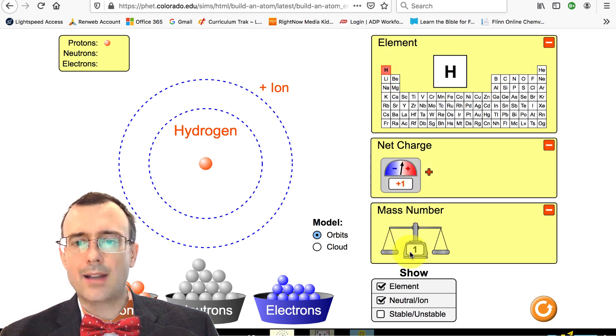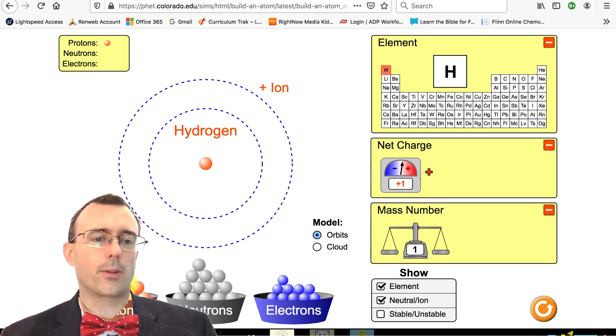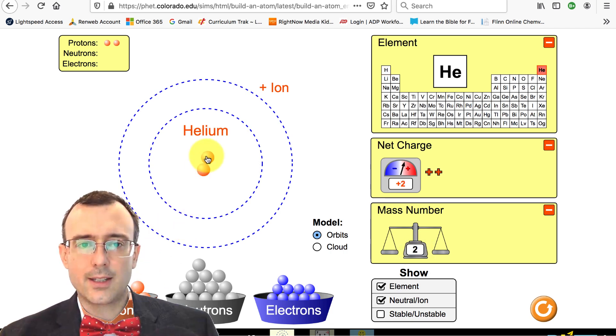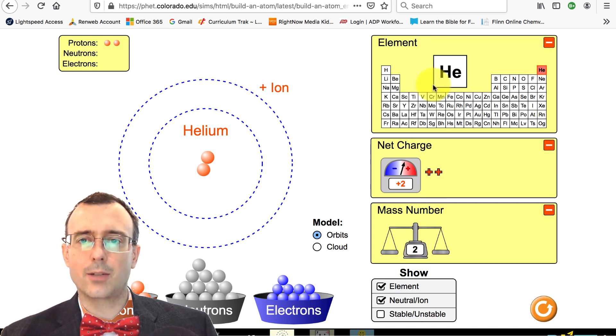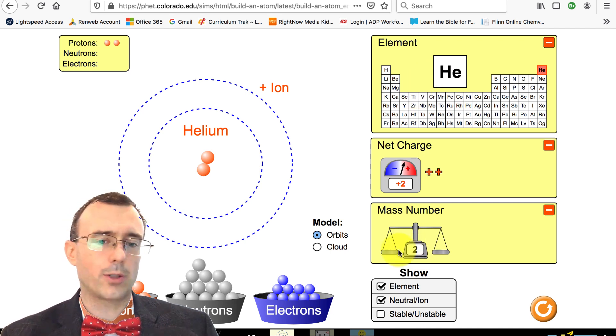Now this is hydrogen, and we see hydrogen is highlighted right here on the periodic table, and it has a net charge of plus one, a mass number of one. We can grab another proton, put it in the center here, and now it changes to helium. So that changed the element, and now it gives us a charge of plus two and a mass number of two. So it's increasing all of those when we add protons.